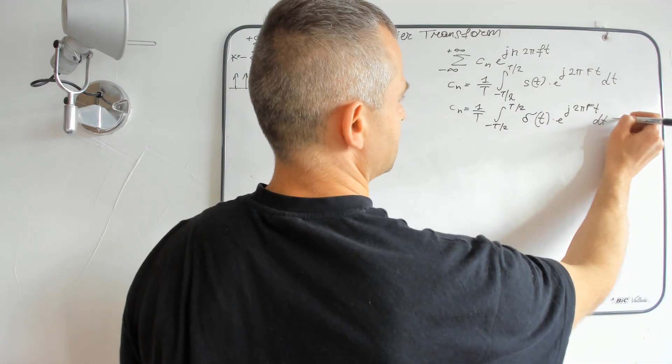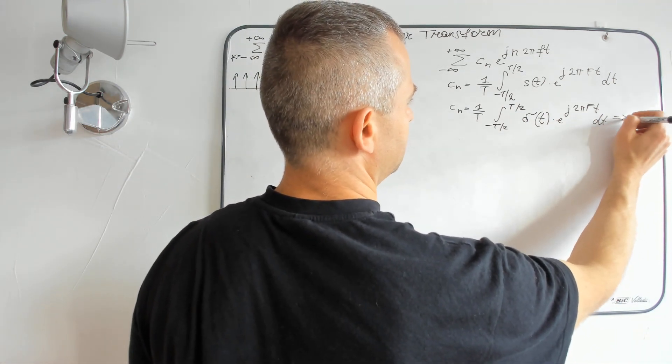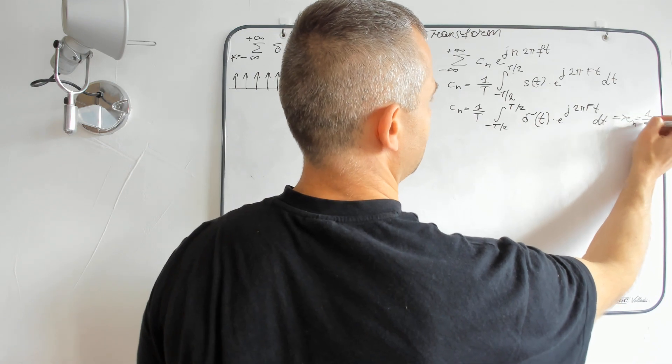And I already shown that this value is 1. So, that means cn is equal to 1 divided by T.